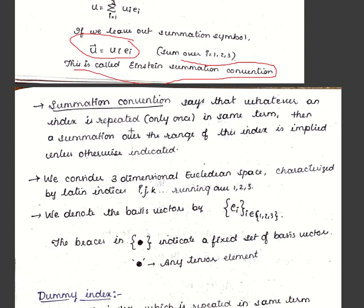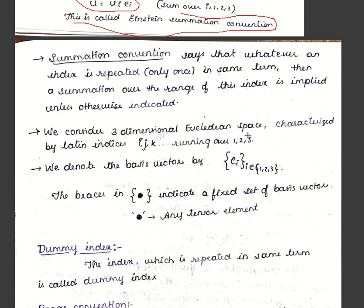The summation convention states that whenever an index is repeated once in the same term, summation over the range of that index is implied unless otherwise indicated. For three-dimensional Euclidean space, Latin indices i, j, k run over 1, 2, 3. We denote the basis vector by ei, where i ∈ {1, 2, 3}. The braces indicate a fixed set of basis vectors, and inside can be any tensor element.